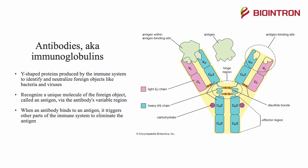What are antibodies, also known as immunoglobulins? They are Y-shaped proteins produced by the immune system to identify and neutralize foreign objects like bacteria and viruses. They recognize a unique molecule of the foreign object called an antigen via the antibody's variable region. When an antibody binds to an antigen, it triggers other parts of the immune system to eliminate that antigen.